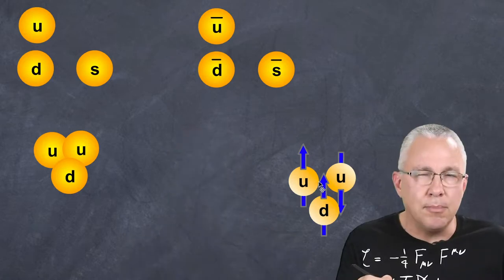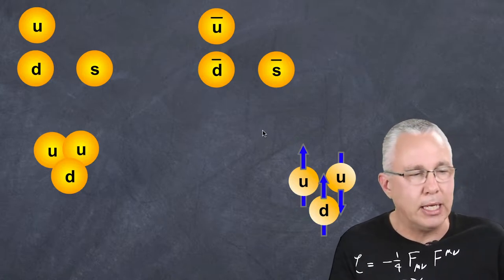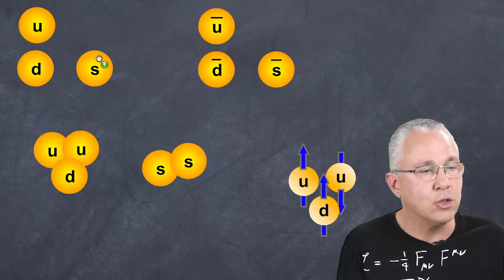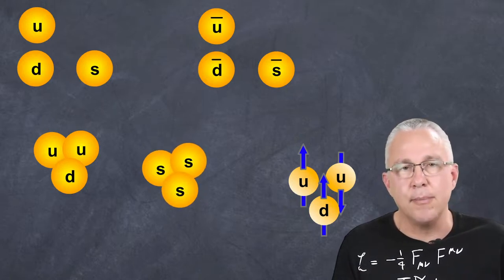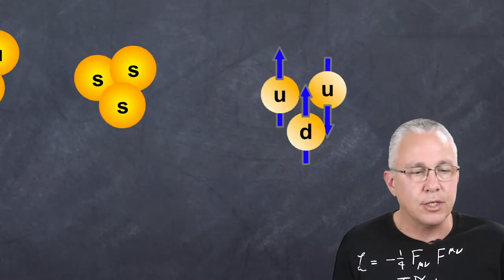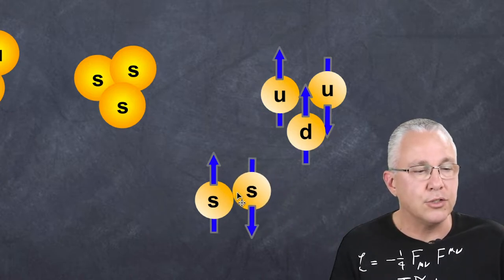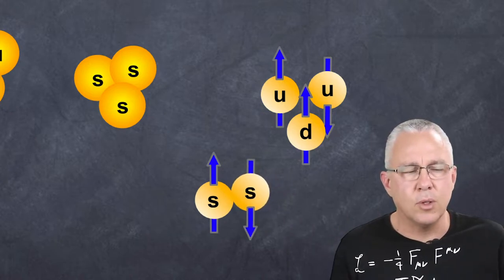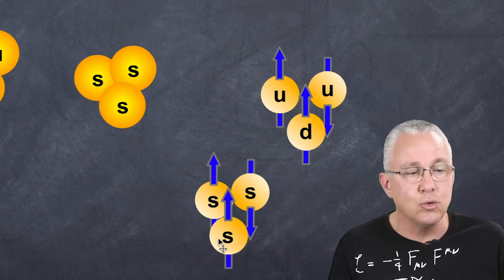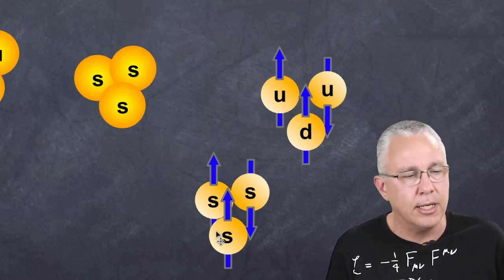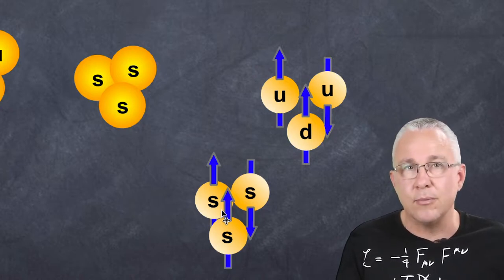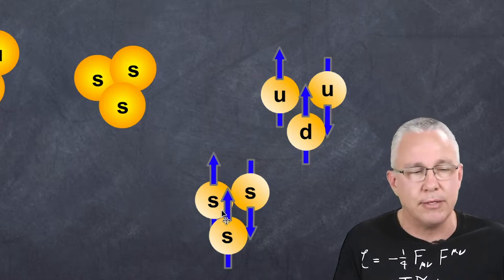The problem is this: what if I wanted to make that omega minus? The omega minus is basically three strange quarks. The problem is that if I bring those three together, I can have a spin-up one and a spin-down one, but then I automatically have two pointing in the same direction — and that's not allowed. So here's the problem: the quark model has a fundamental issue in that we can't have two quarks with exactly the same set of quantum numbers. How do we solve that?